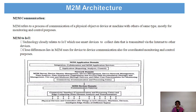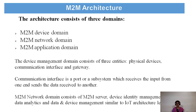Edge computing data involves data element analysis and transformation. In the network domain, there is network management, data analysis, abstraction, accumulation, connectivity, and communication and processing units. The M2M application domain provides M2M application services. The device management domain consists of three entities: physical devices, communication interface, and gateway devices. The communication interface is a port or subsystem that receives input from one end and gives data to the other. The M2M network domain consists of an M2M server for device identity management, data analytics, and device management, similar to the IoT architecture.